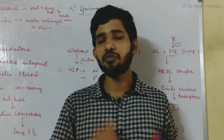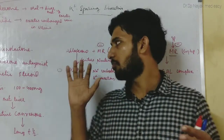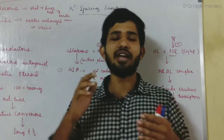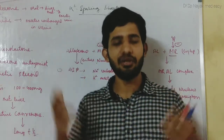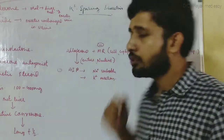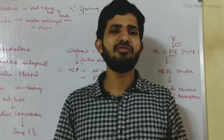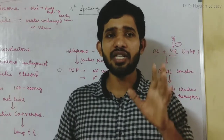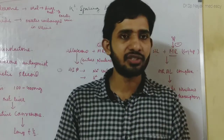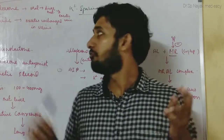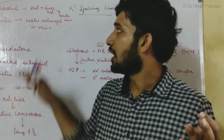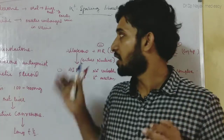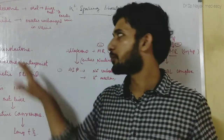In today's class we will discuss potassium-sparing diuretics. Potassium-sparing diuretics include three different types of drugs: we have spironolactone, triamterene, and amiloride. Among these three drugs, we commonly use spironolactone.